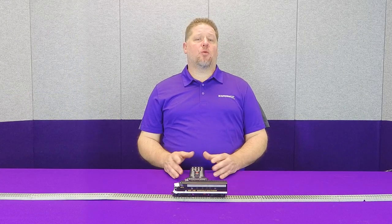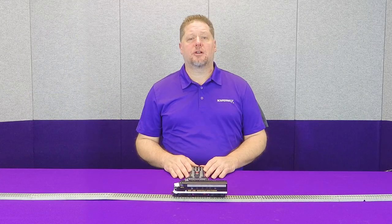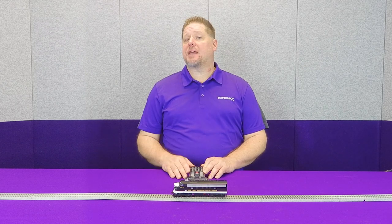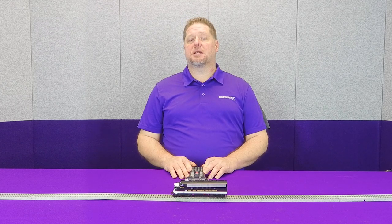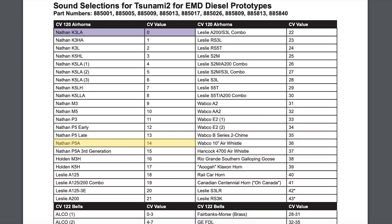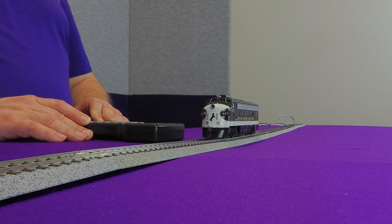When we want to change that, we don't need to spend an hour looking on a computer or downloading files. We simply make a CV adjustment. So CV number 120 is where the horn selection changes. So in this case, if we look at our reference guide, we see that we want to have the Nathan P5A air horn play. So that's going to be horn selection number 14, according to the chart.